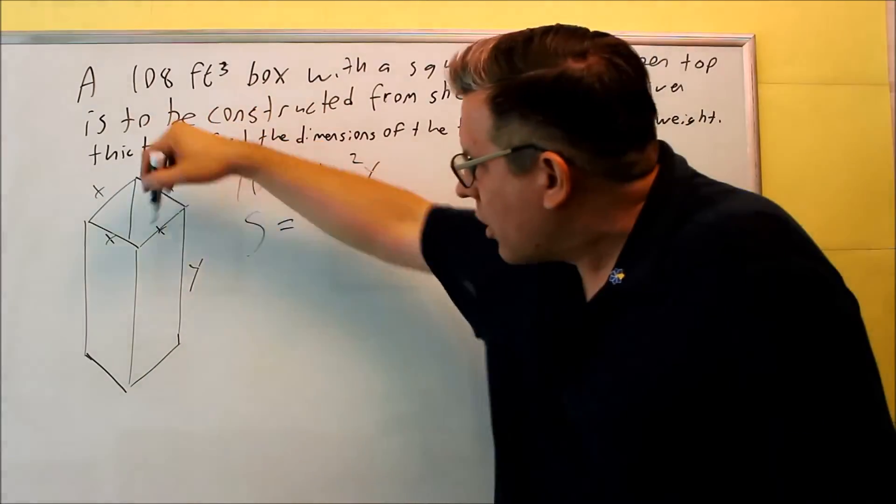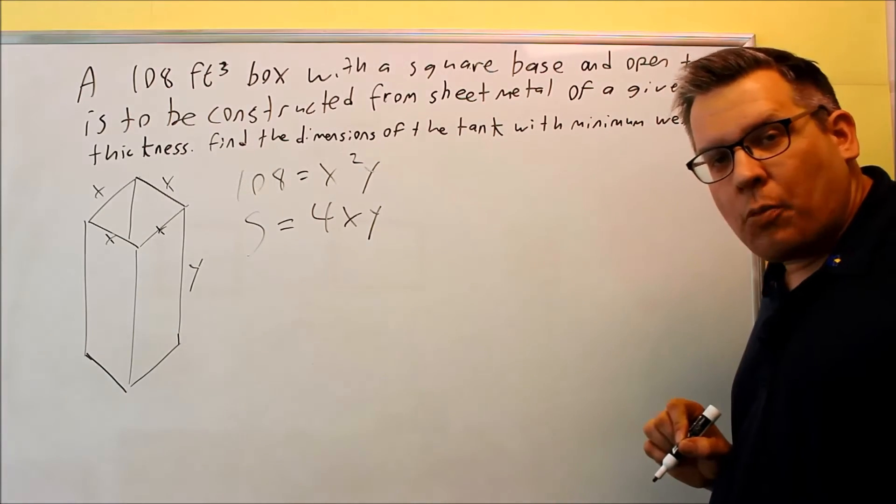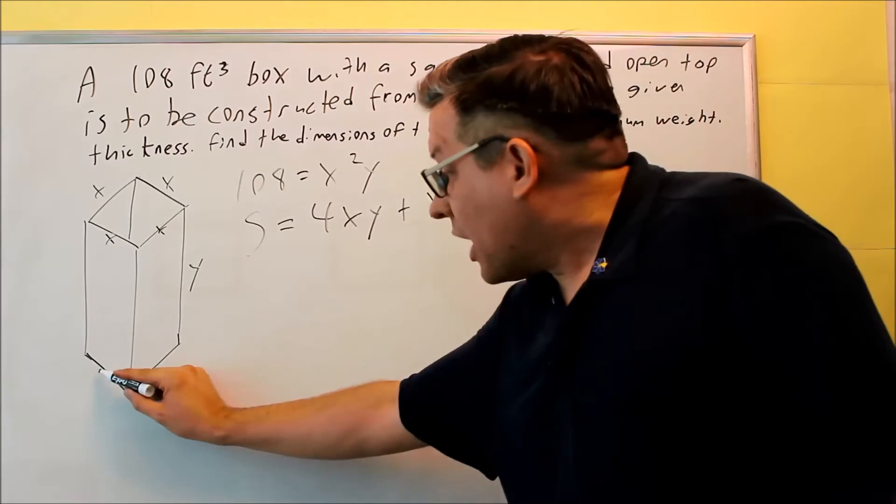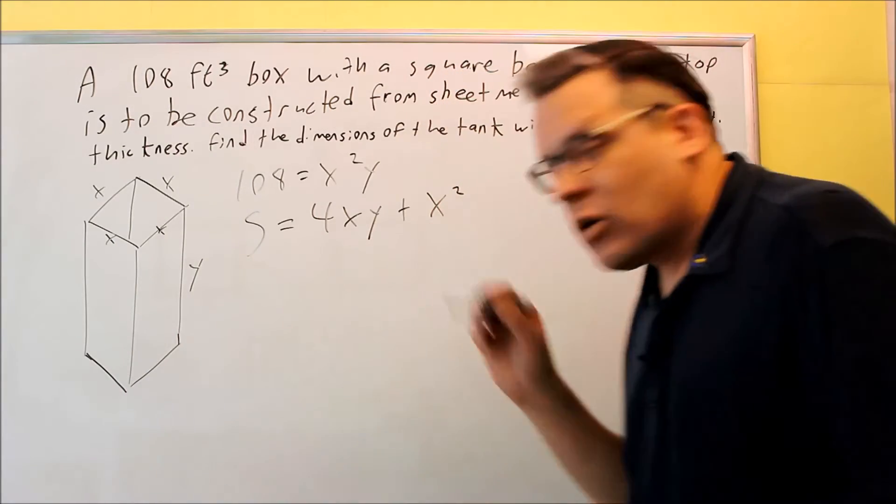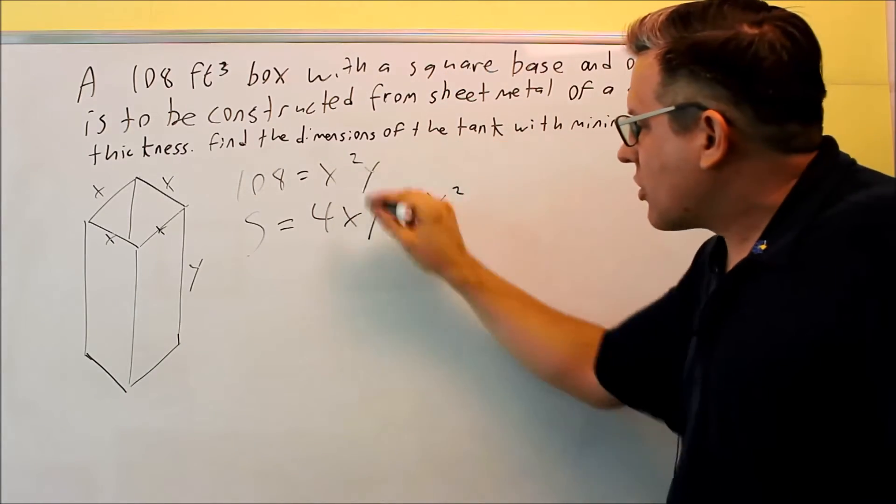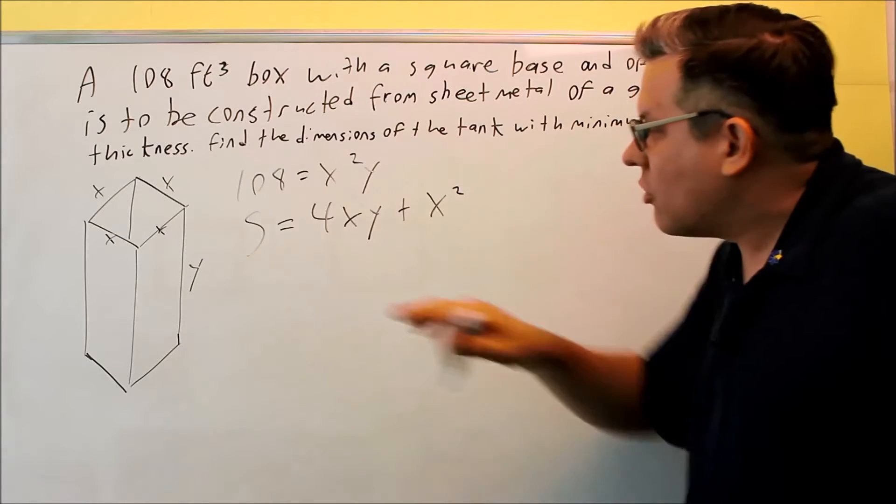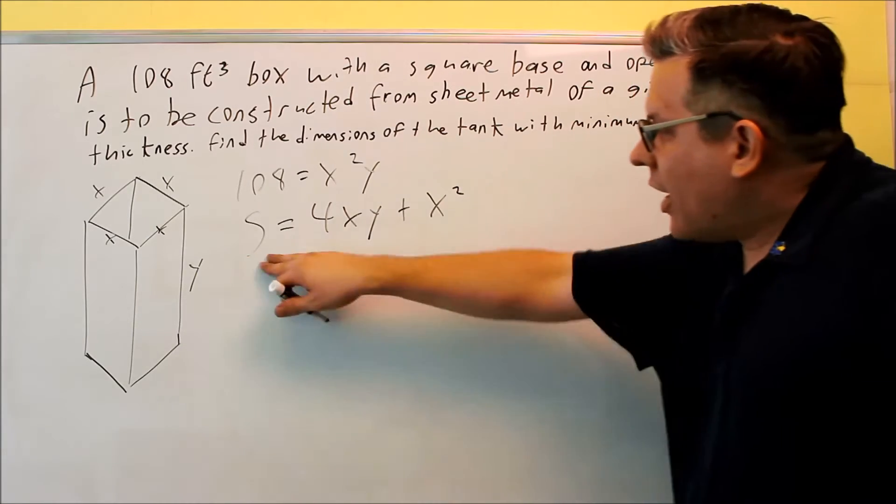But then don't forget that you also have to include the base as well. Now we only have one of them because the top part is going to be open here. So that base is going to be X squared because on the bottom you have X times X all the way around. So this is going to be our correct surface area formula.